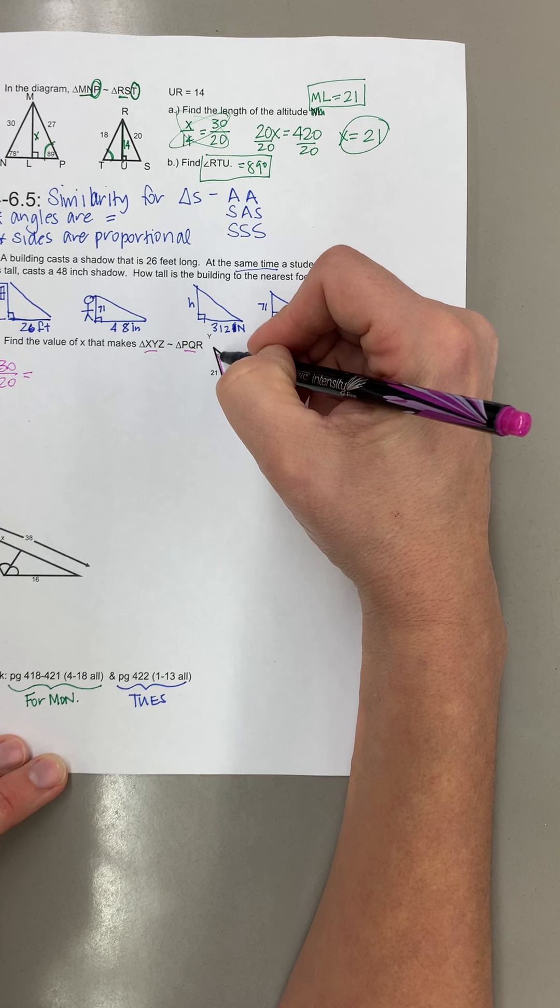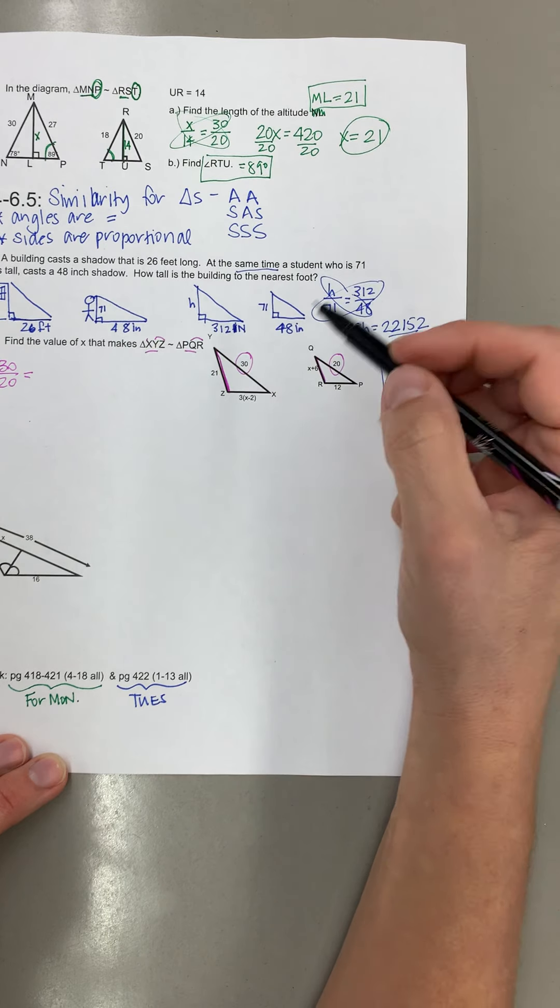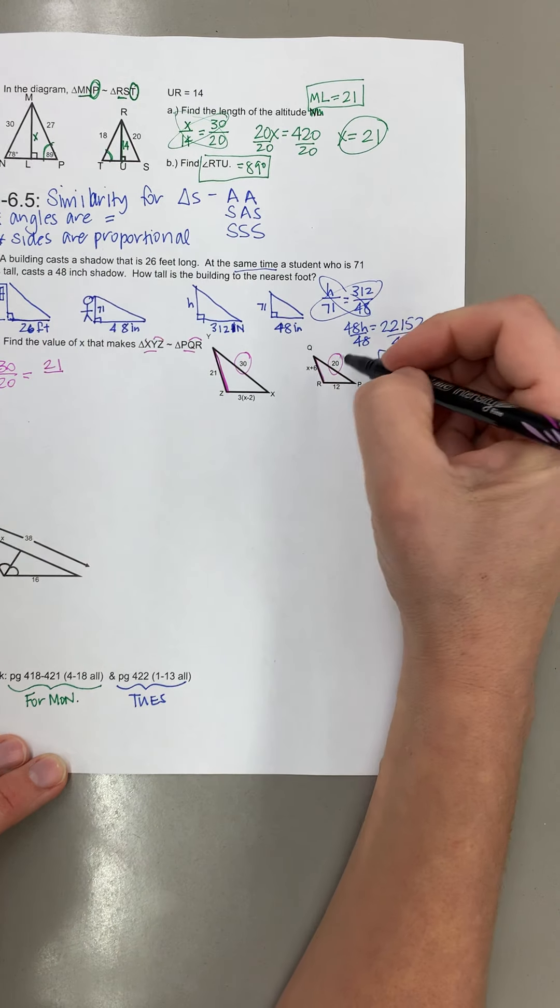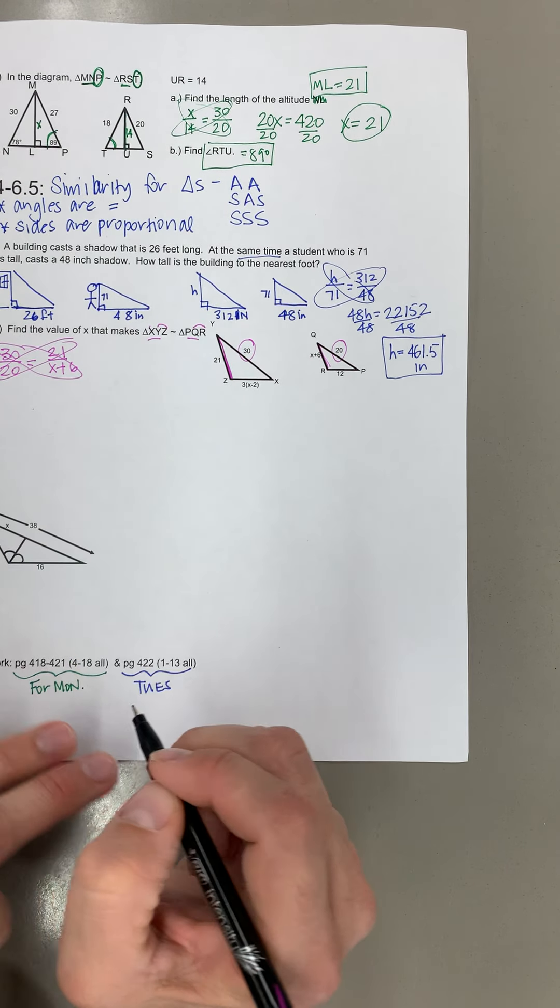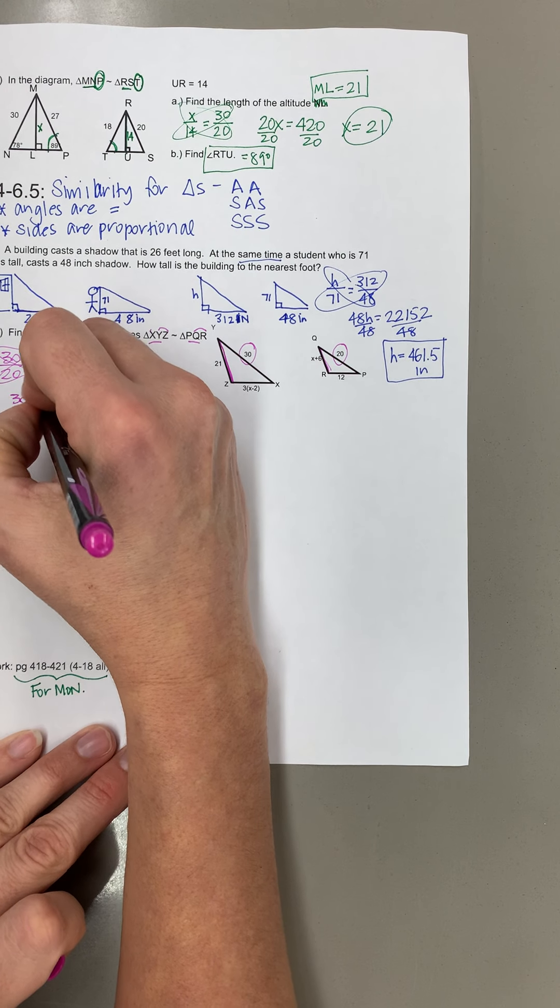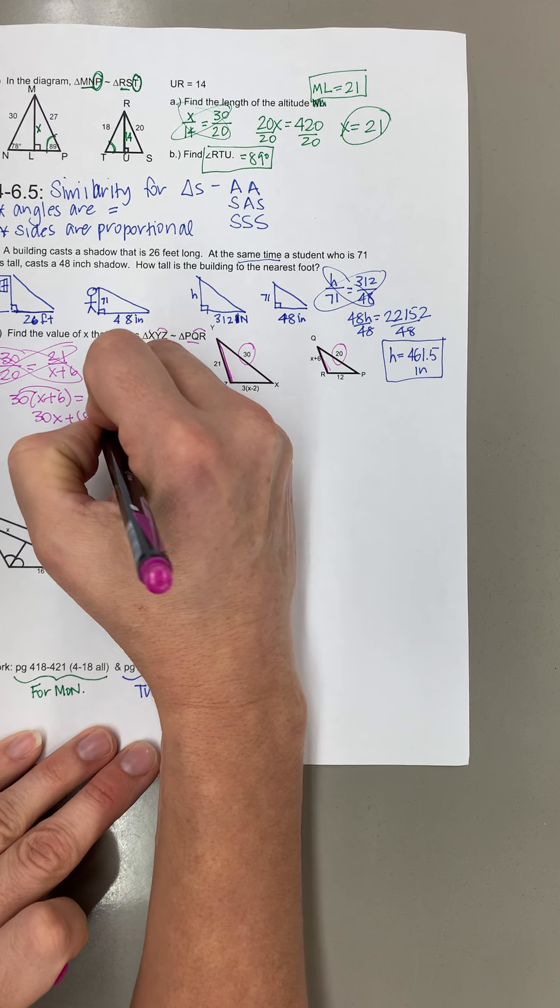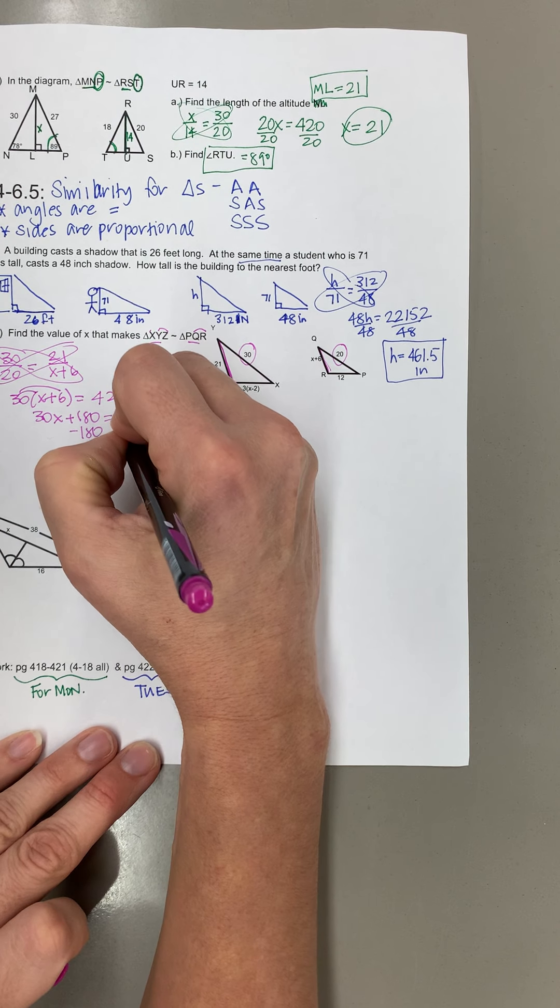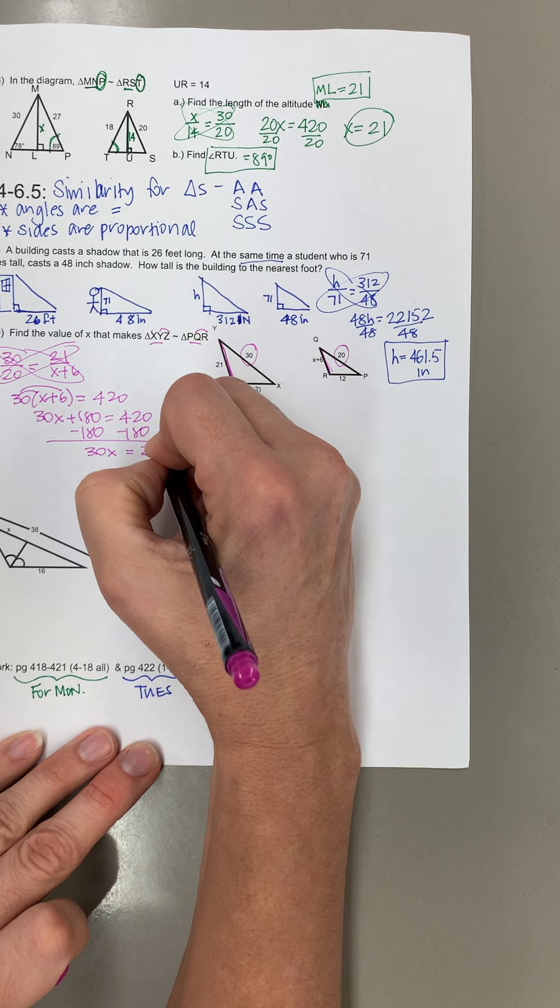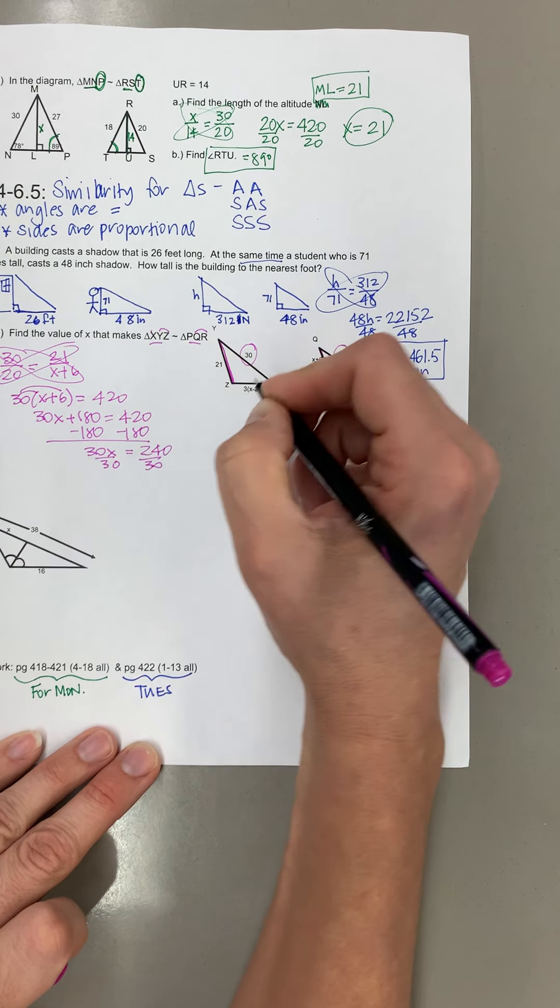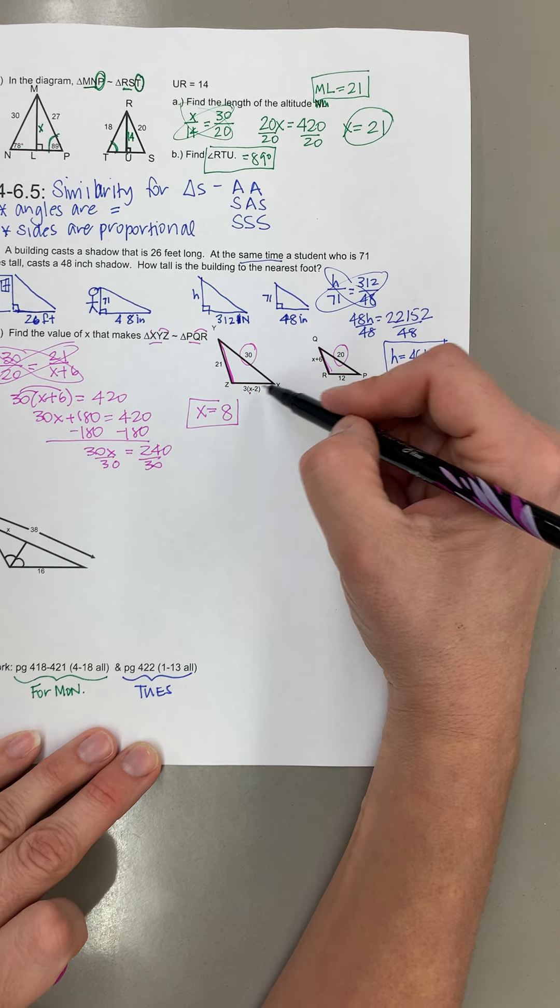And then if I'm using this one yz should go with qr. So since 30 and 21 are in the same shape then x plus 6 would be down here. And so we find out x would be 8. And actually we don't have to find this x because it should also be 8.